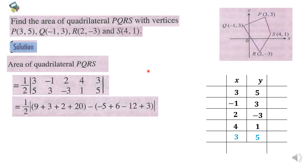3 times 3 equals 9. Negative 1 times negative 3 equals 3. 2 times 1 equals 2. 4 times 5 equals 20.